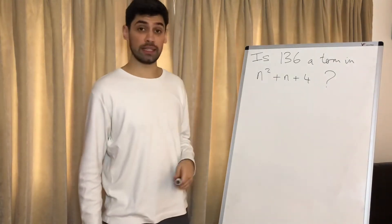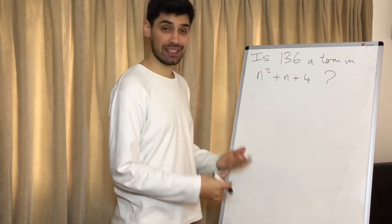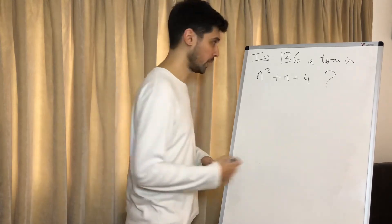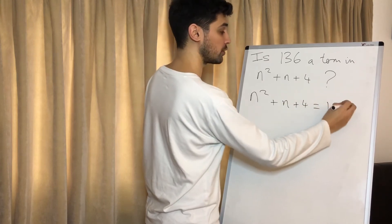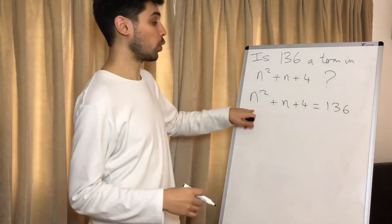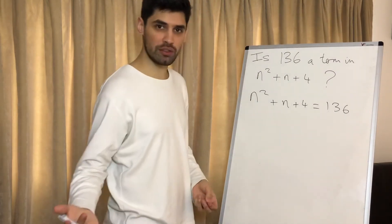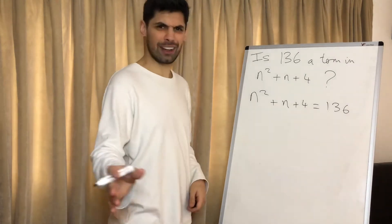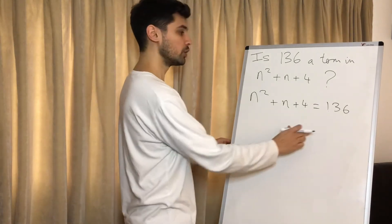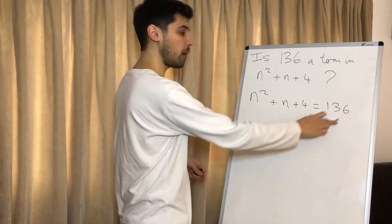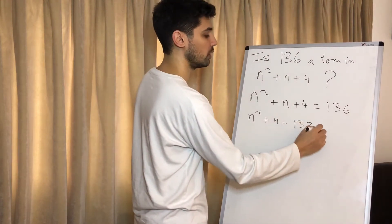To determine whether 136 is a term in this sequence, we need to make this sequence equal to 136 and see if there is a value for n for which it exists. So we write: n squared plus n plus 4 equals 136. As we should be able to tell, this is in quadratic form, so we're going to try and solve it by factorising quadratics — usually the most efficient way. You could use the formula, or on many calculators you can just type it in, but we're going to do it longhand.